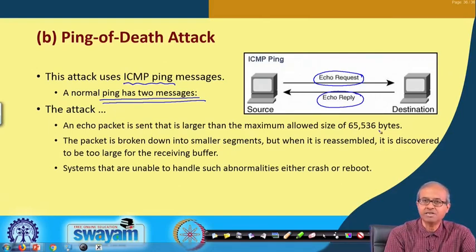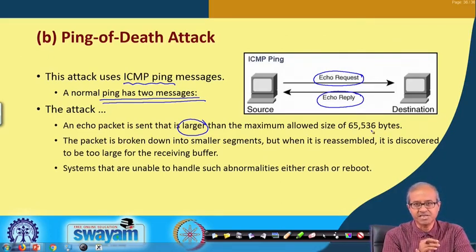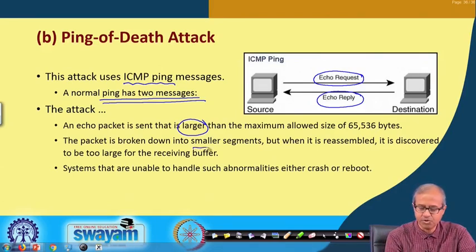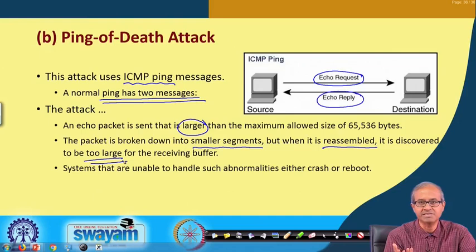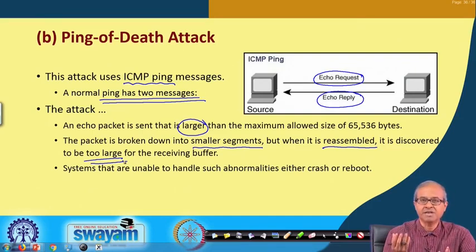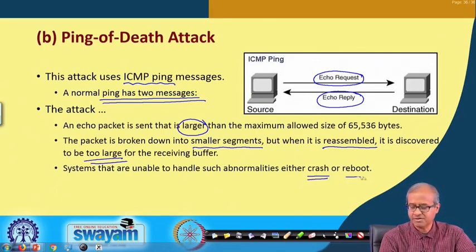In this attack, an echo packet is deliberately sent which is larger than this maximum size. Because it is larger, fragmentation occurs — multiple IP fragments are created and sent. But on the other side, when they are reassembled, it will be discovered that the total packet size is greater than 64 kilobytes and it cannot be delivered to the ICMP destination, which can only receive packets up to a maximum of 64K. There are systems where if such a large packet comes that is too large to handle, the software at the receiving end may either crash or the system may reboot.